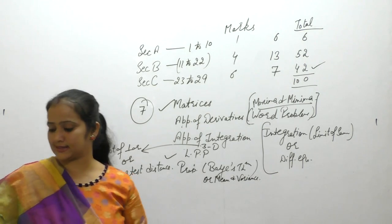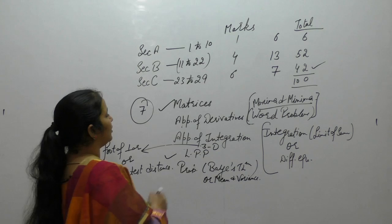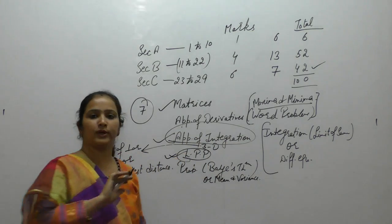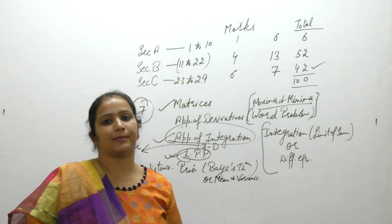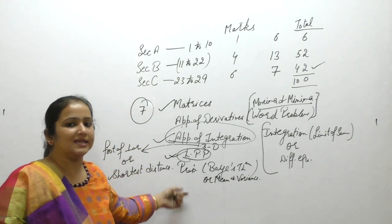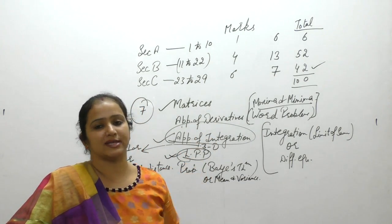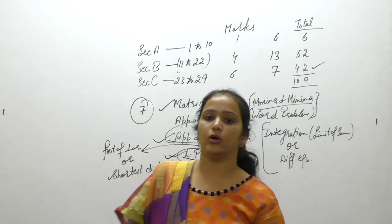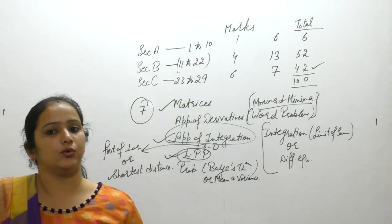Now, the next thing — if we talk about Section B. If you complete Section C, then LPP and Application of Integration — two chapters — will be completely done. After the difficult parts of the chapters are done, revising the remaining chapters is not a big task. So if you prepare Section C well within 7 days, that's enough. After that you can go to Section B and Section A.